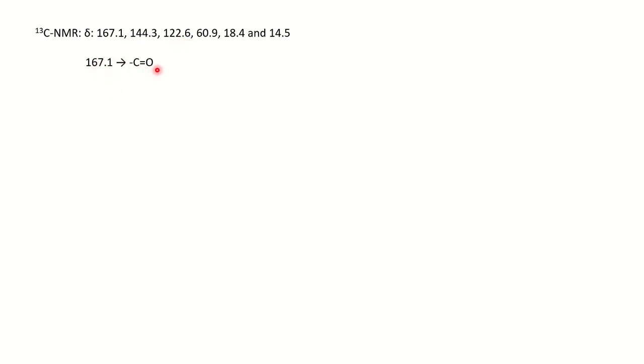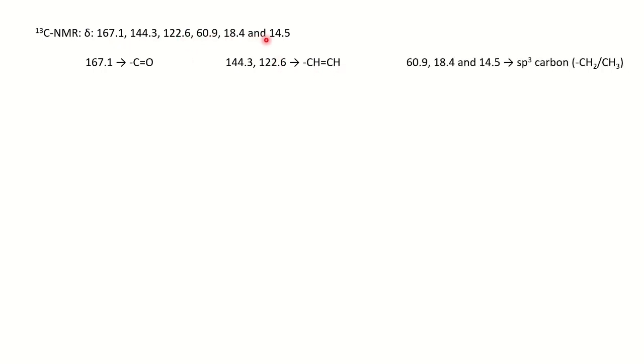From the 13C NMR, the peak at 167.1 ppm suggests a carbonyl carbon — knowing the chemical shift ranges for different carbonyl carbons helps identify whether it is an acid, ester, aldehyde, or ketone. Peaks at 144 and 122.6 ppm belong to alkene carbons (two different types). This accounts for six different carbon environments in total. Peaks around 60, 18, and 14 ppm correspond to sp3 carbons, likely CH2 and CH3 groups.